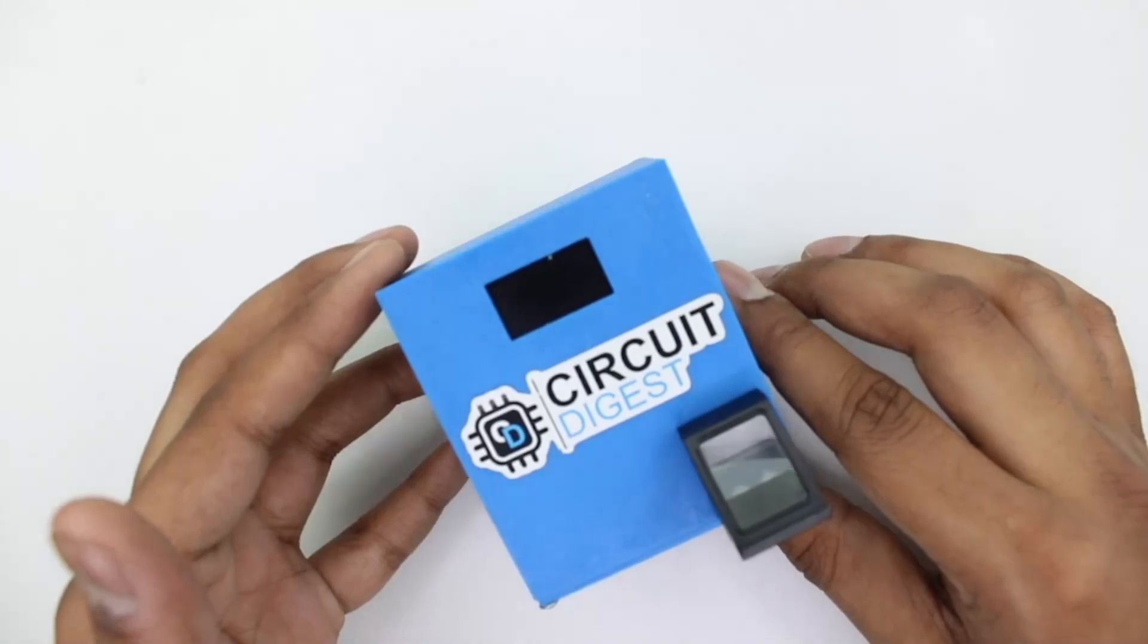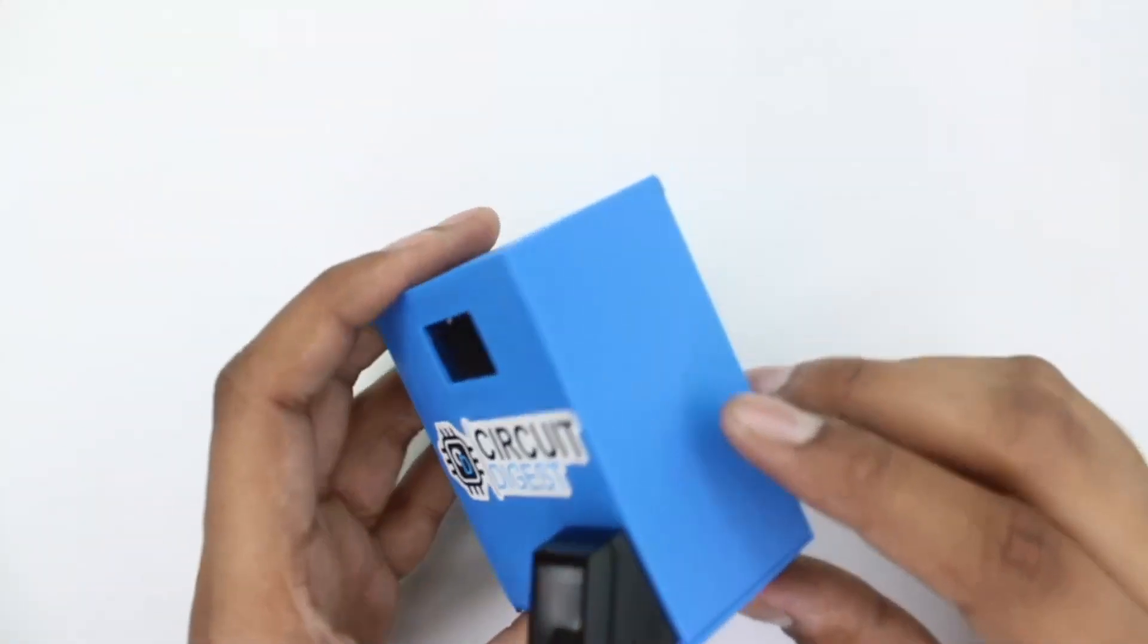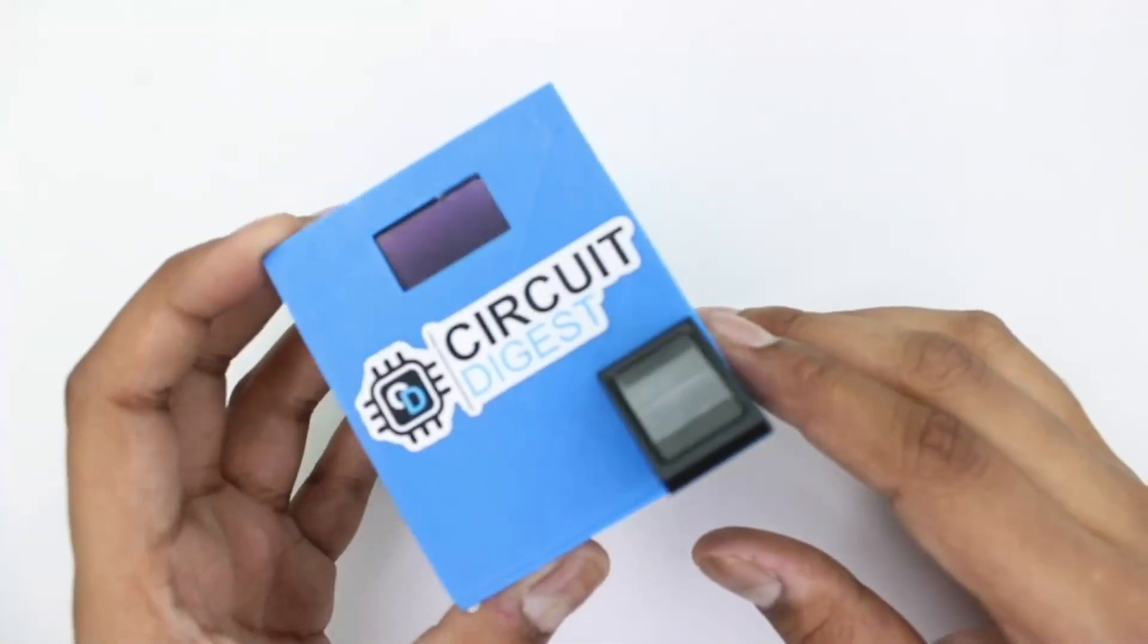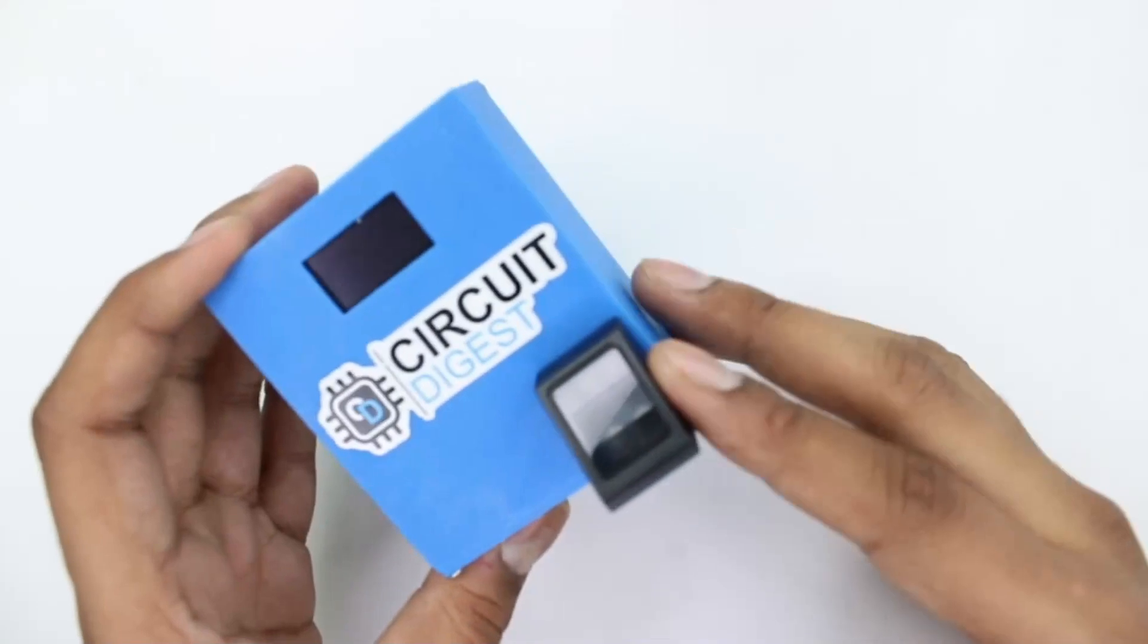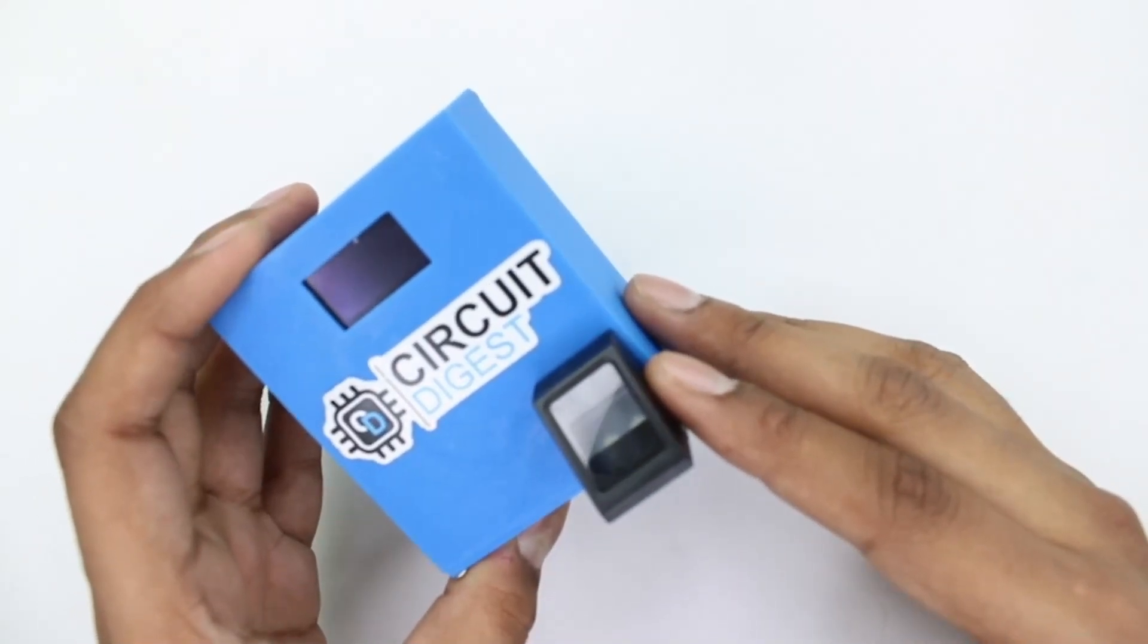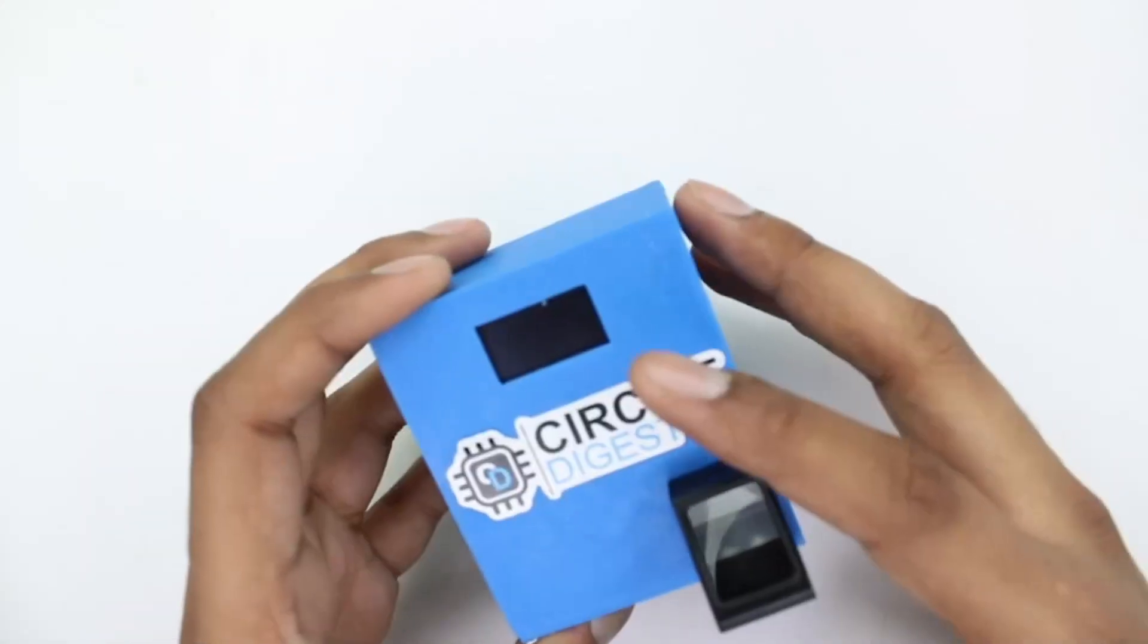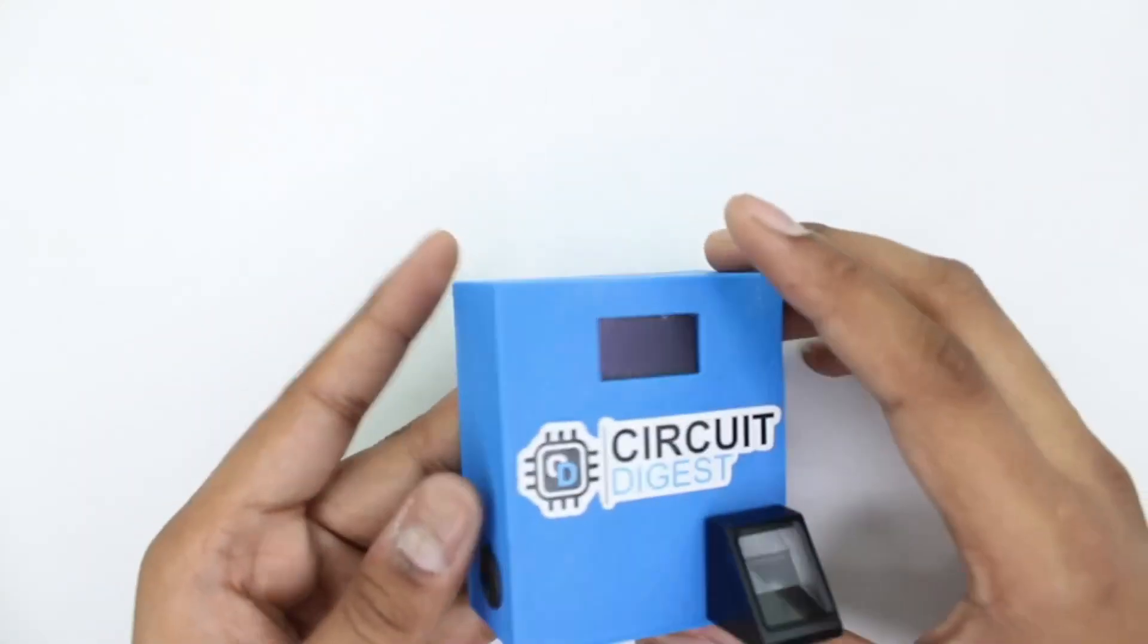Here we have the finished project built inside a 3D printed enclosure. The project is based around the ESP32 microcontroller unit and uses an R307 fingerprint sensor along with a DS1307 RTC. For display we have a 0.96 inch OLED, and to power it all up we have a 5 volt power supply.